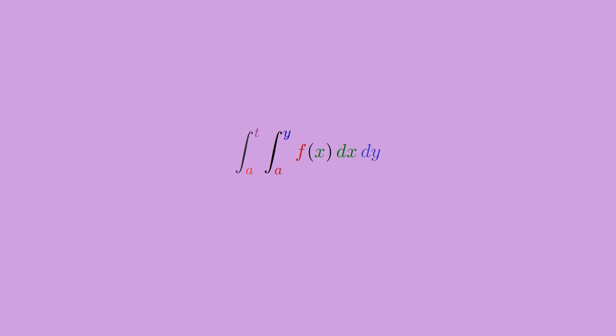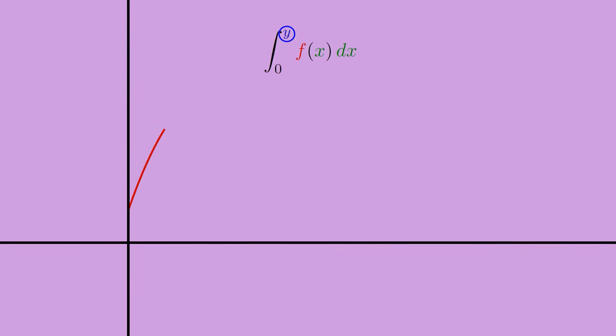To start, let's focus on the inner integral alone for now. Here, the lower limit a is just some constant. Turns out it doesn't really matter what a is, as long as it's a constant. So just to keep things simple for now, let's take a to be zero. As for the upper limit y, we should think of it as an independent variable we can control. As you change y, you change the area under the f of x curve the integral is computing.